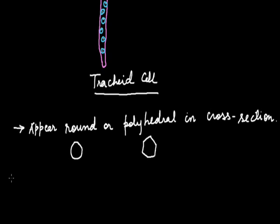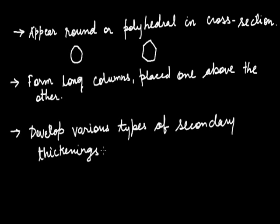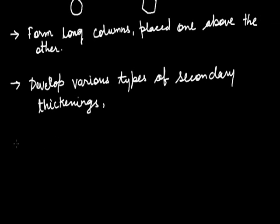These tracheids elements form long column when placed one above the other. These tracheids elements develop various types of secondary thickening and on that basis they can be of different types which are as follows.